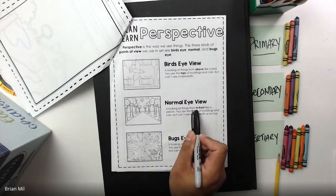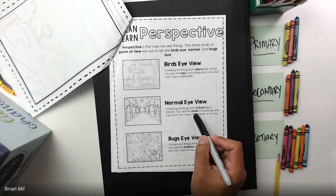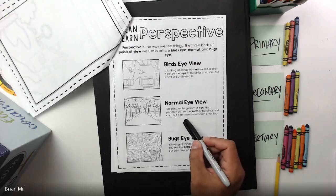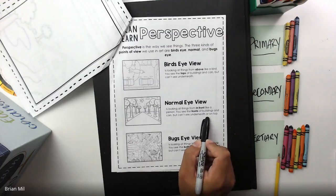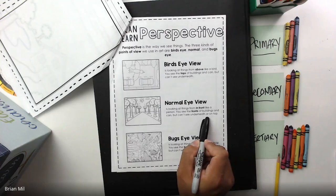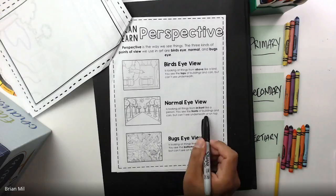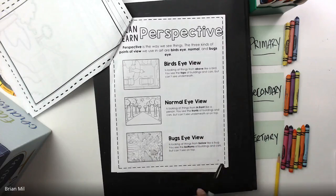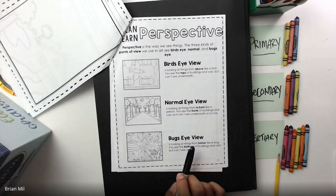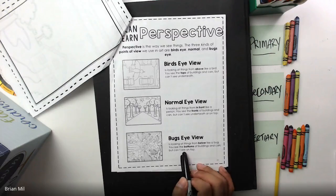Normal eye view is when you look at things from in front, like a person. You see the fronts of buildings and cars but can't see underneath or on top. Basically, that's the normal version of how we view images, portraits, and stuff — that's called normal eye view.